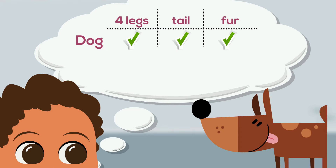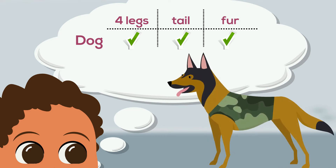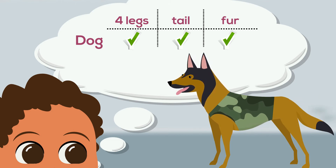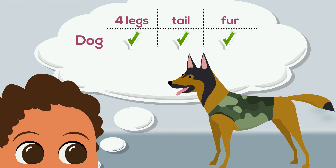Now, imagine the child has only ever seen a husky and one day sees a golden retriever. The child tries to interpret the information and fit it into his or her current schema of categorizing, finally declaring the animal is also a dog. Thus, the child assimilates the information, having been a little in doubt at first.